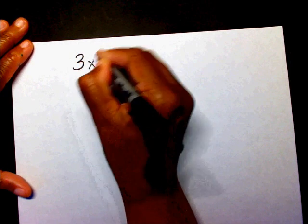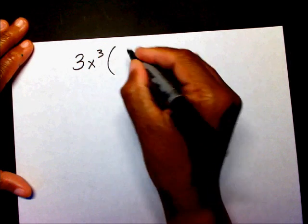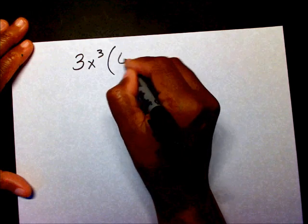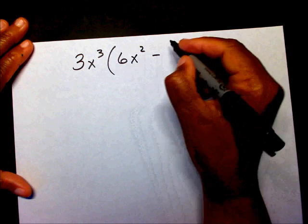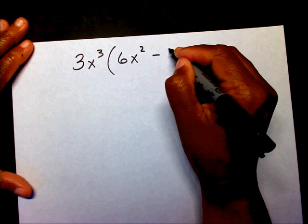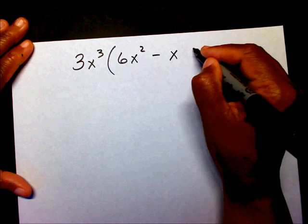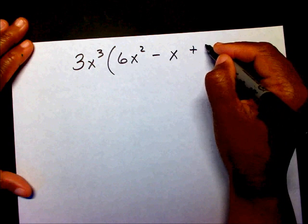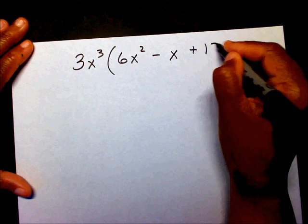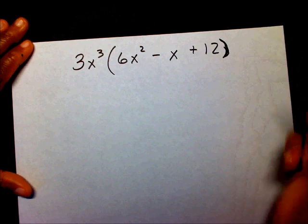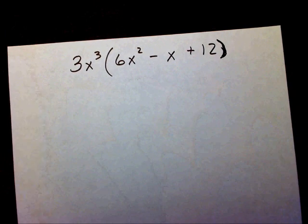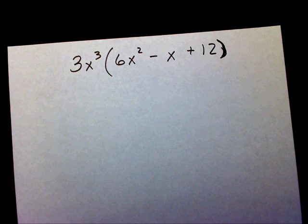Let me let you try one — I'm going to make it a little bit harder. Let's try 3x to the third times 6x squared minus x plus 12. Please multiply that and put the video on pause.